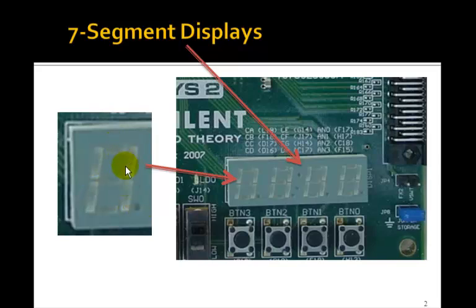These are going to be labeled A, B, C, D, E, F, G. And you can light up any one of them to form whatever character you want.